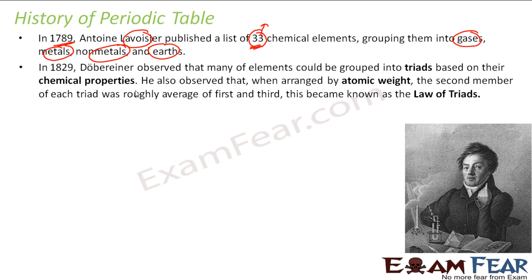Then this guy, Döbereiner, came along. He grouped elements into triads based on their chemical properties, and he observed that the atomic mass of the middle element is equal to the mean of the first and the last. He tried to group elements based on atomic weight — this was the first grouping based on atomic weight.